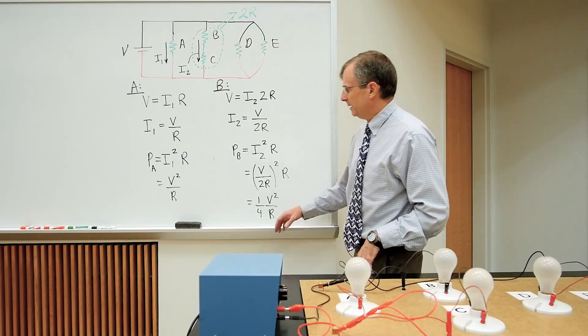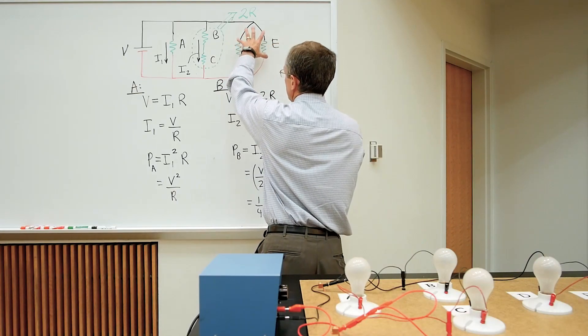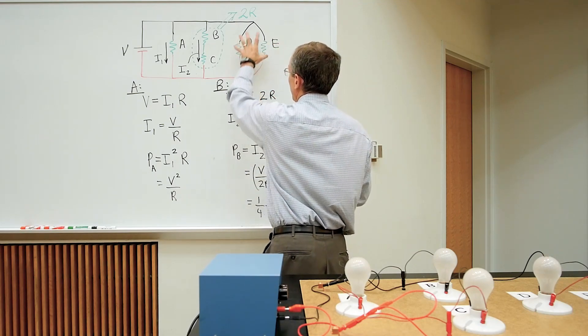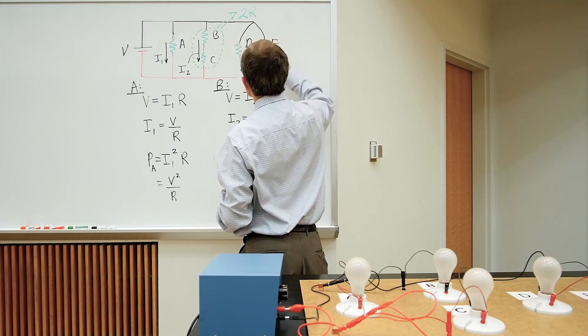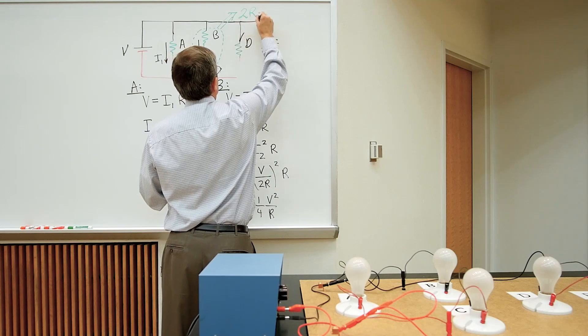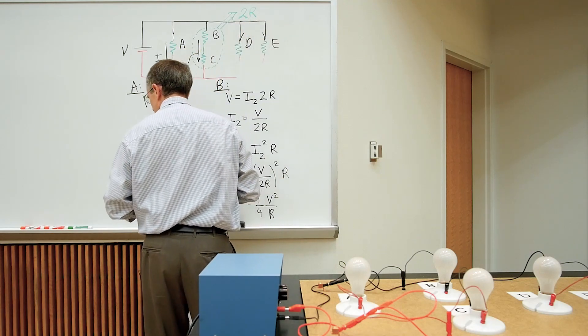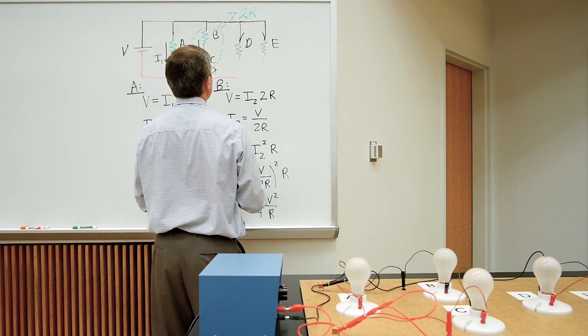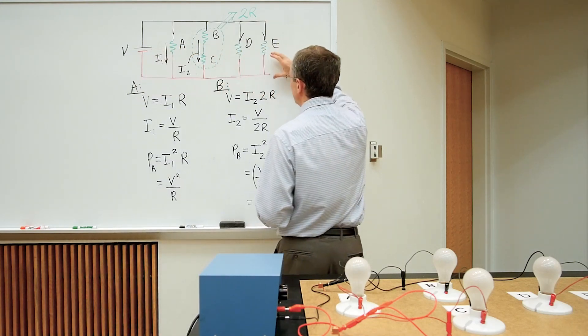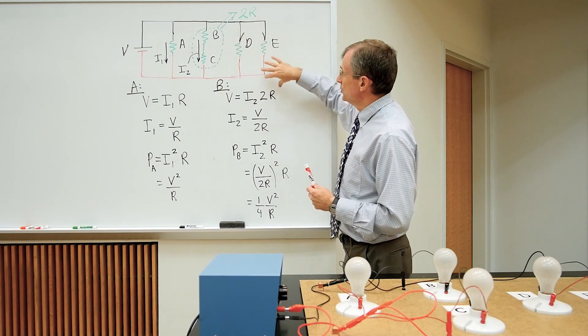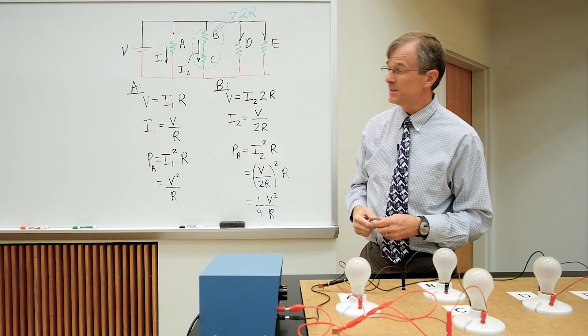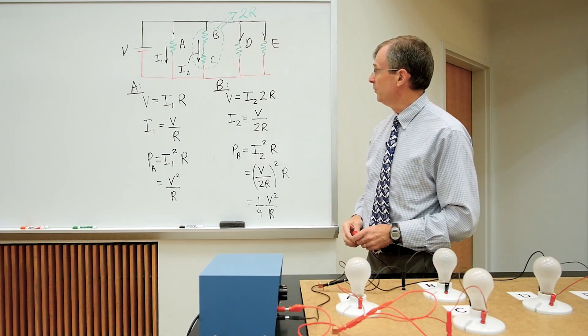If we had, and this, the way that we've written it here shows that there's a parallel connection between D and E. We could have just as well written this equivalently like that. The connections as shown here are exactly the same as far as parallel or series is concerned as the way that it was written before.